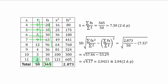And when you add, you have 50. So the mean is 365 divided by 50. And you have 7.30 to 2 decimal places.